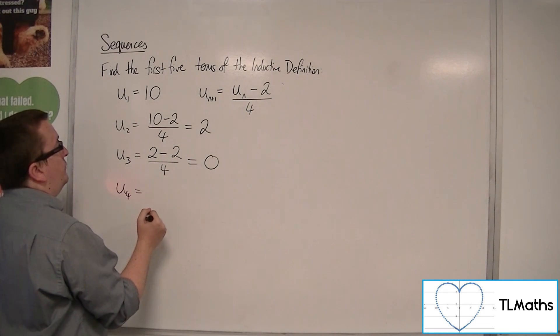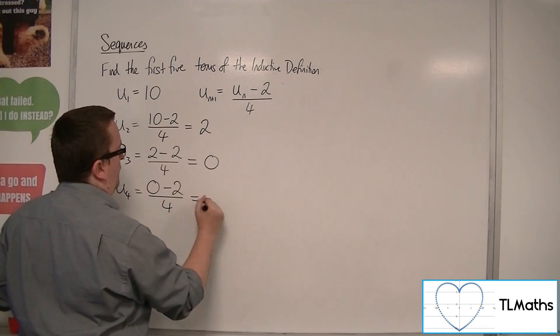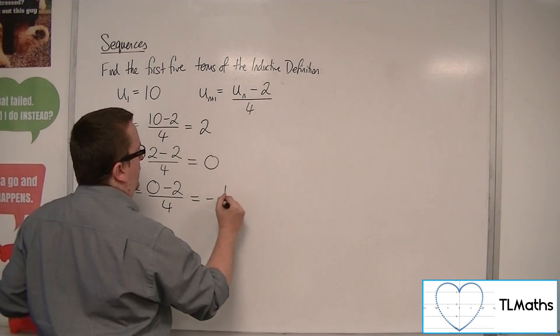Then u4 will be the previous term, take away 2, divided by 4. So we get minus 2 over 4, which is minus a half.